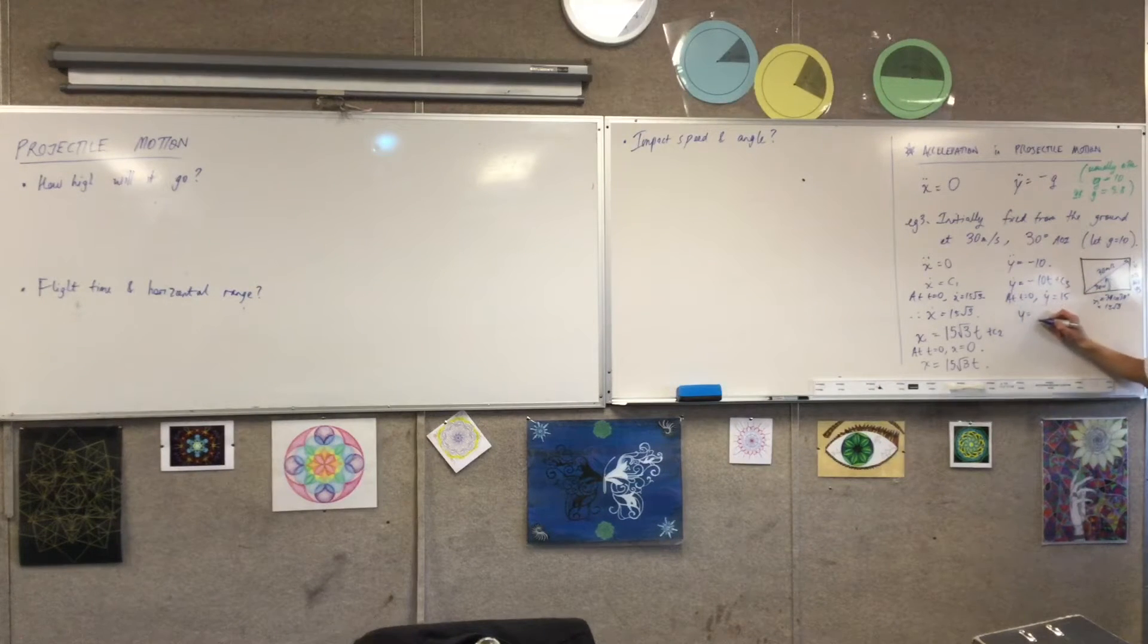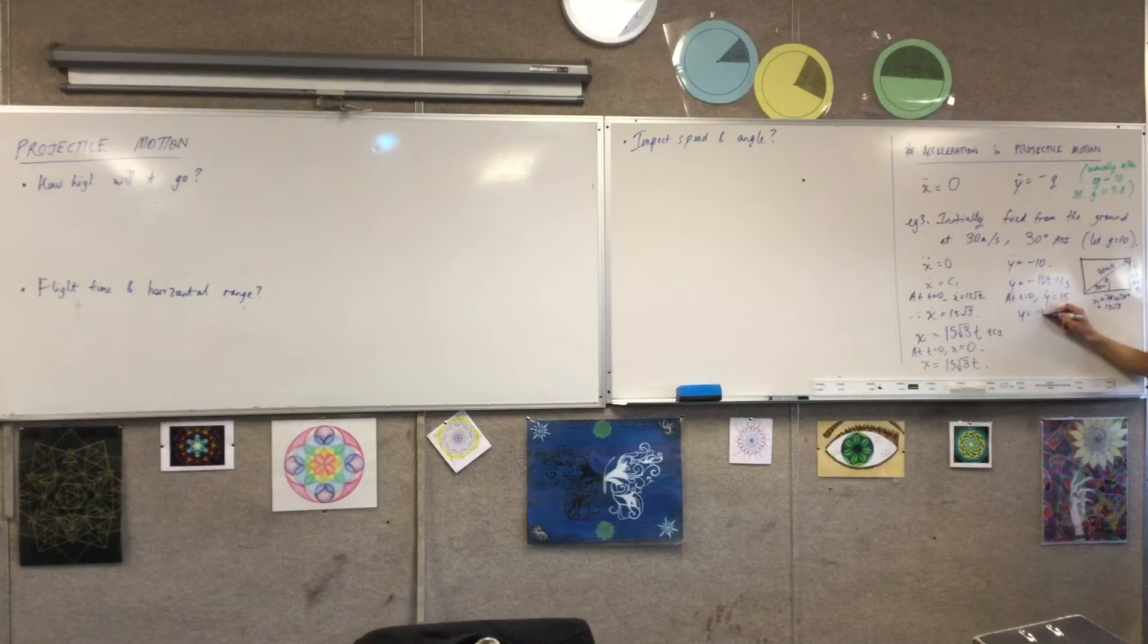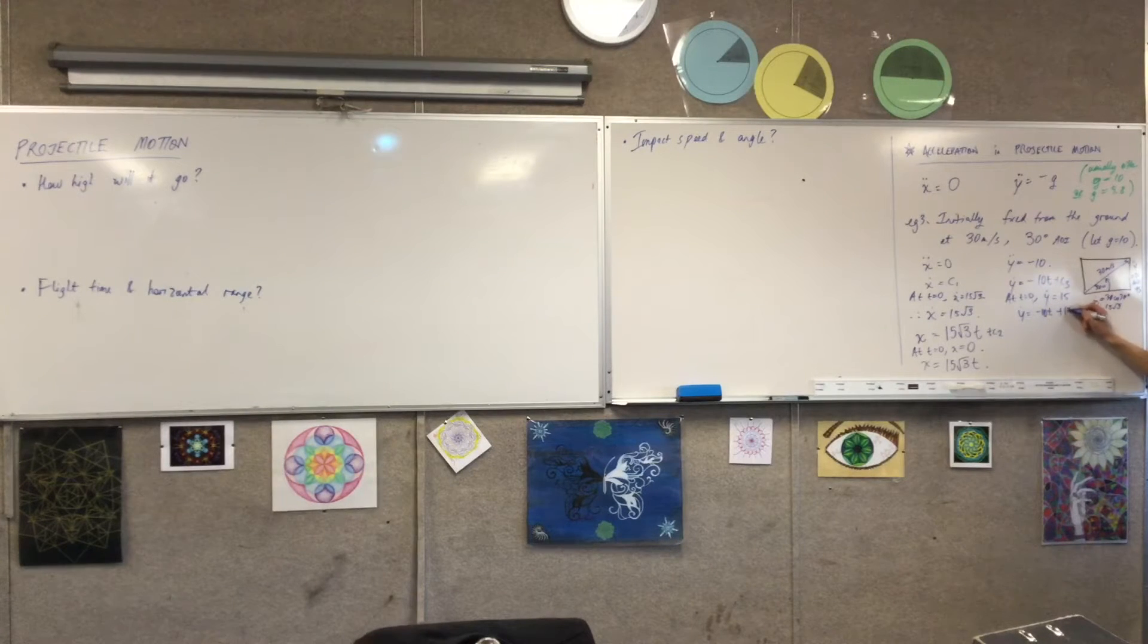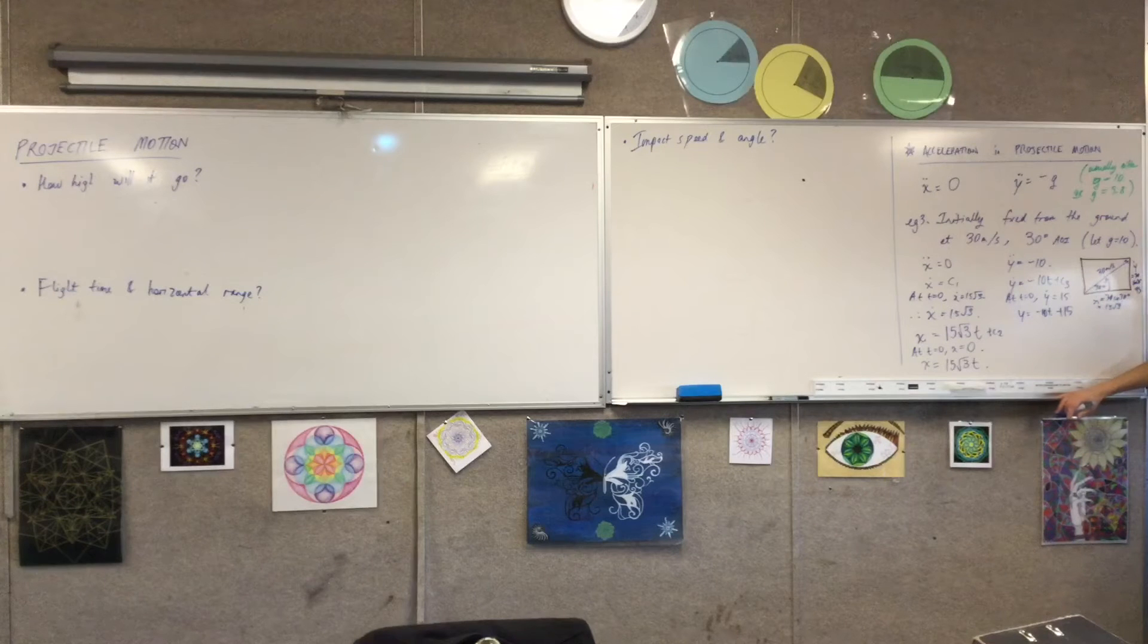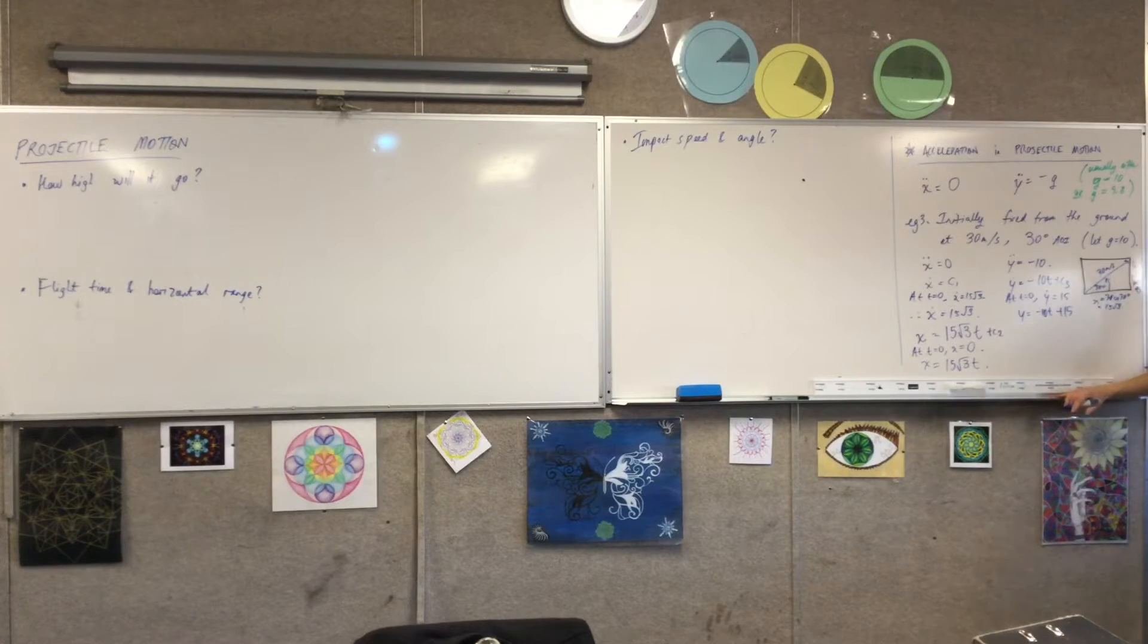And so therefore, y dot is equal to... What's that constant going to be? Okay, cool. That wasn't too difficult. I'm going to integrate it one more time. Hooray, last one.